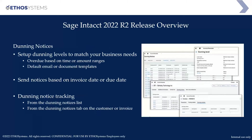For dunning notices, you can set up the dunning notice level to match your business needs — overdue based on timing or amount ranges. You can select a default email or document template to send out. These notices are based on invoice states or due dates, and you can track them from the dunning notice list. Dunning notices that have been sent also appear on the customer tab or invoice tab — a new tab available within Sage Intacct.